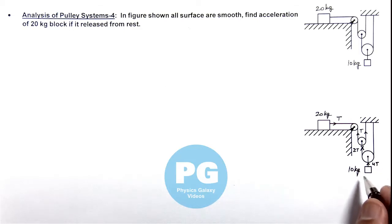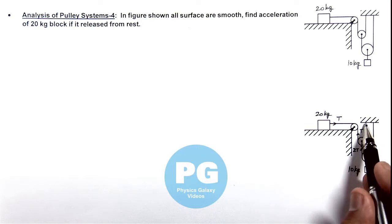Now if we consider that 10 kg block is going down with acceleration ay, this pulley will go down with acceleration ay. As it is fixed on the other side, this pulley will come down with acceleration 2ay.